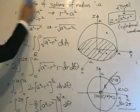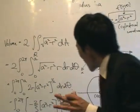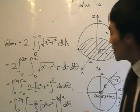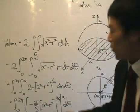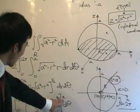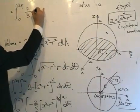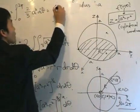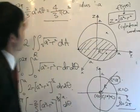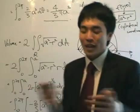Substituting the limits — a goes into r and 0 goes into r. When r equals a, (a squared minus a squared) to the 3/2 equals 0; when r equals 0, (a squared minus 0) to the 3/2 equals a cubed. So we get the integral from 0 to 2 pi of 2 divided by 3 times a cubed d theta. Since theta is not inside the integrand, this is a simple integration giving 4 divided by 3 pi a cubed — the volume of the whole sphere, as expected. This tallies with the geometrical argument, and we derived it using double integrals in polar coordinates.